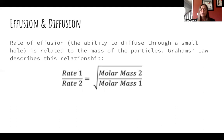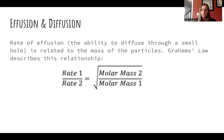The rate of effusion is related to the mass of the particles. Since kinetic energy equals ½mv², if two gases have different masses at the same temperature — and therefore the same kinetic energy — they must be moving at different velocities. The lighter one moves faster and the heavier one moves more slowly, even though they have the same kinetic energy. Graham's law expresses that relationship.